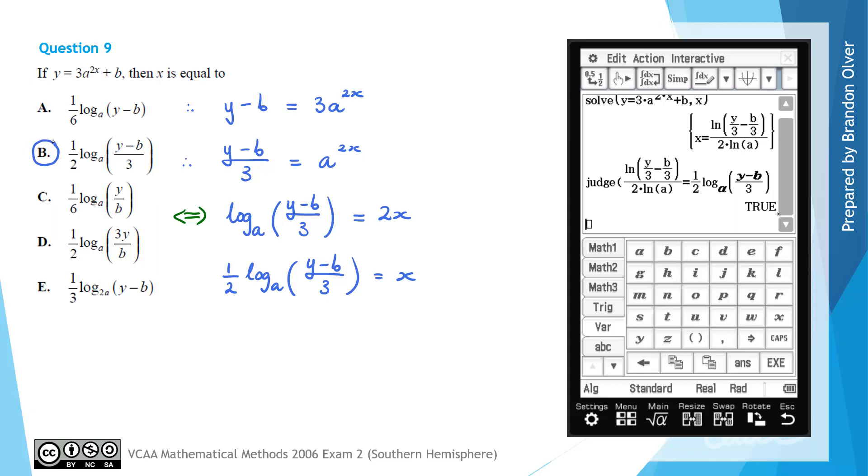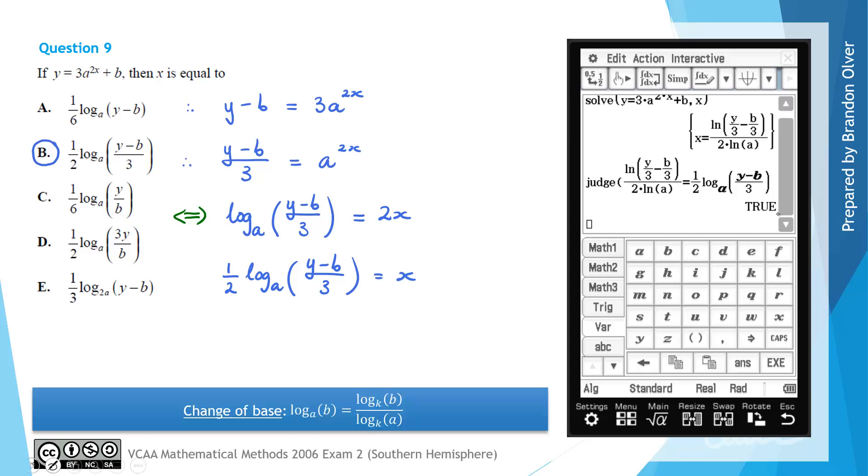So what's actually happened between these two things is what we call a change of base. So the change of base formula that I just referred to is that any log a b term can be expressed with some different base k as being the fraction of log base k of b divided by log base k of a. So in other words the base of the original log which was a in this instance becomes the term inside the log on that fraction. And what was inside the log is still inside the log but just on the top line of that fraction.